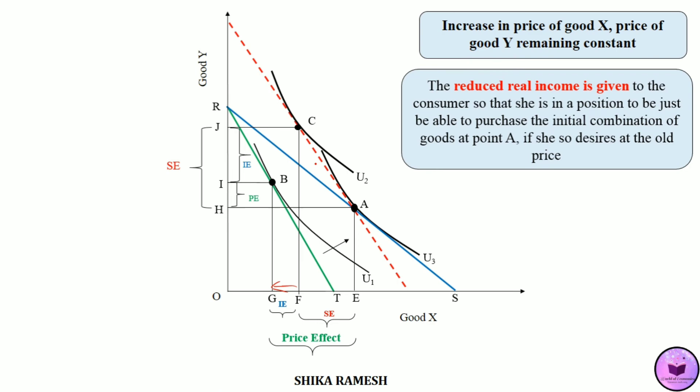The red dotted budget line shows the increased real income while the RT budget line shows the reduced real income. The consumer is at a higher utility level at point C and at a lower utility level at point B. Due to the increase in the price of good X, the consumer's real income has decreased, which is why the consumer is moving from point C to B. Therefore, FG amount of good X has been demanded less by the consumer due to the income effect.